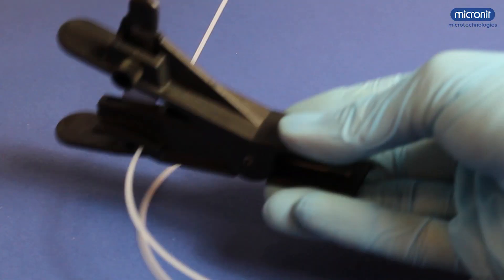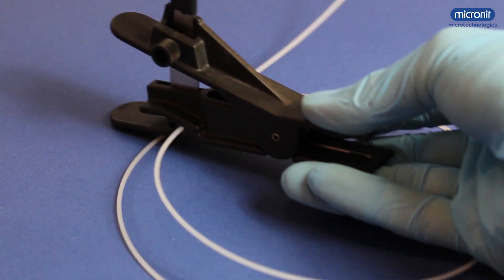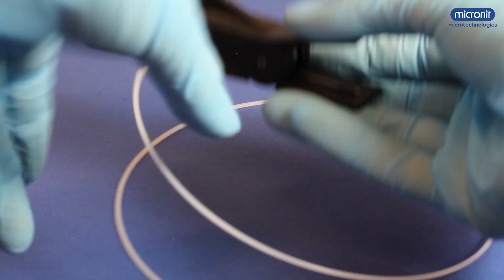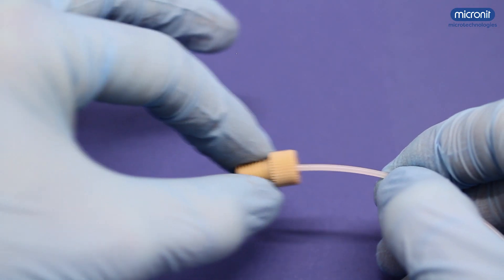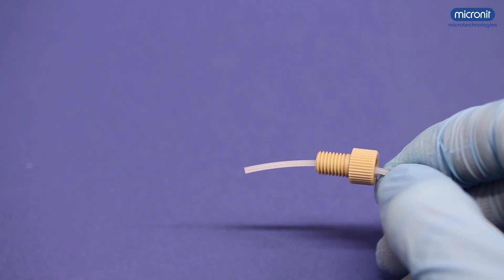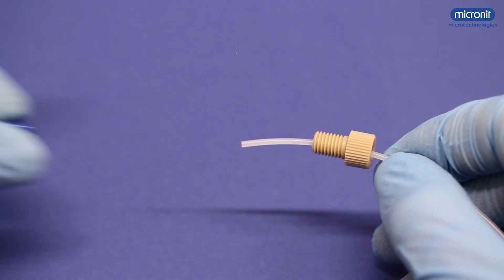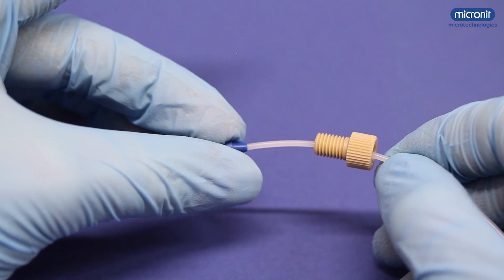Take the thinner tubing and cut it to pieces long enough to reach between components of your setup. Don't make them too long, because the pressure drops with each centimeter of tubing. To connect the tubing to the fluid reservoirs, string the correct parts on the tubing. Also pay attention to having them in the right direction.